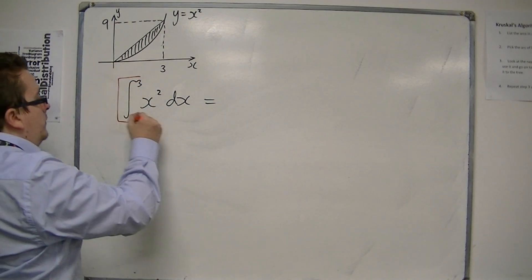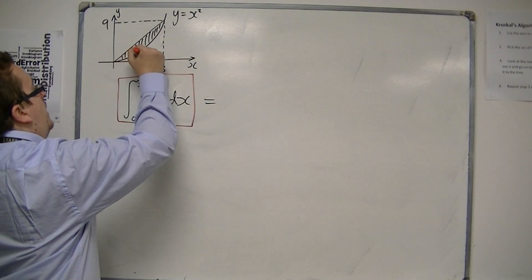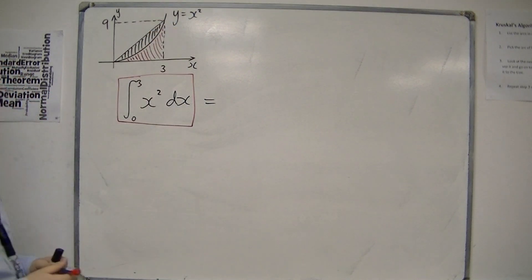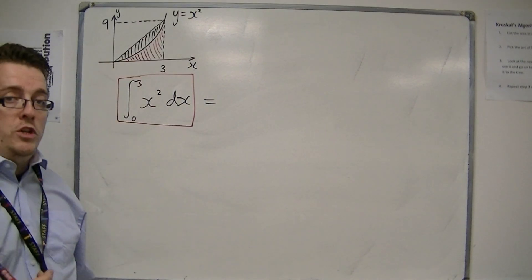This will find me the area between the curve and the x-axis, and so it will find me this red shaded region.